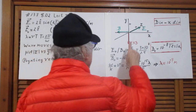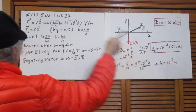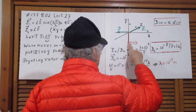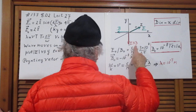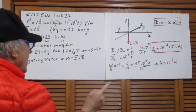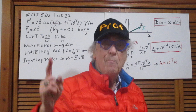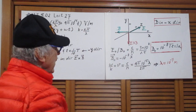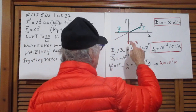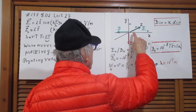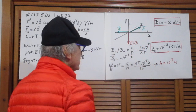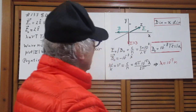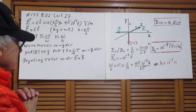We know E is in the Z direction and E × B must be in the minus y direction. Therefore B must be in the minus x direction, because only then does E × B point in the minus y direction.